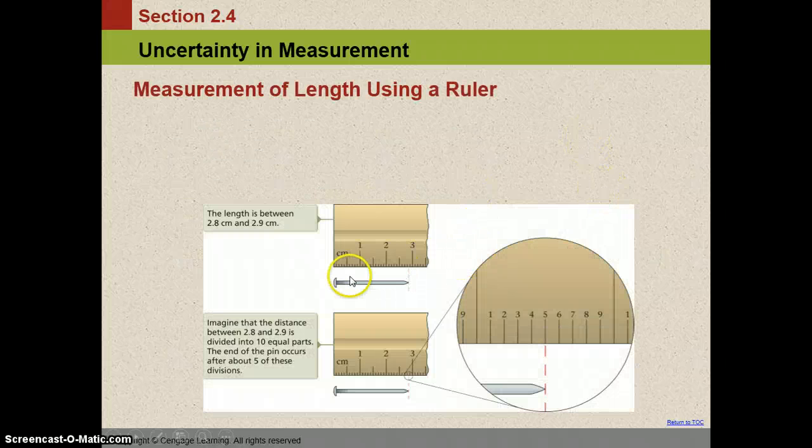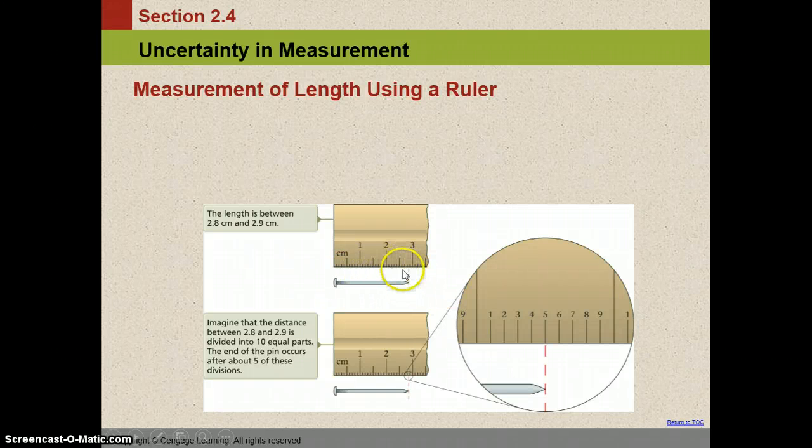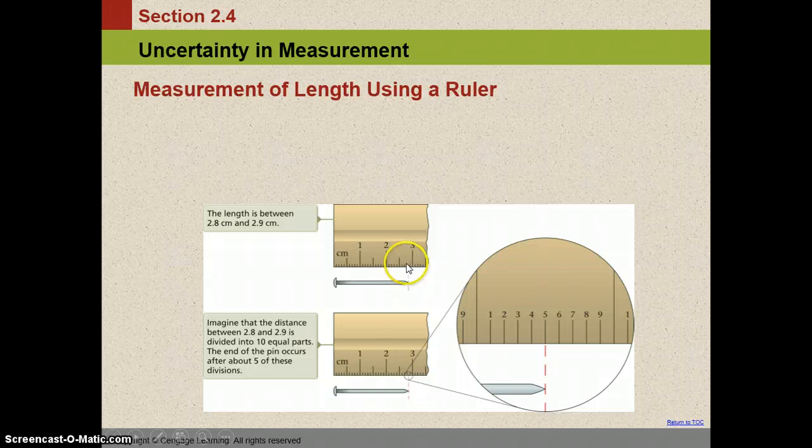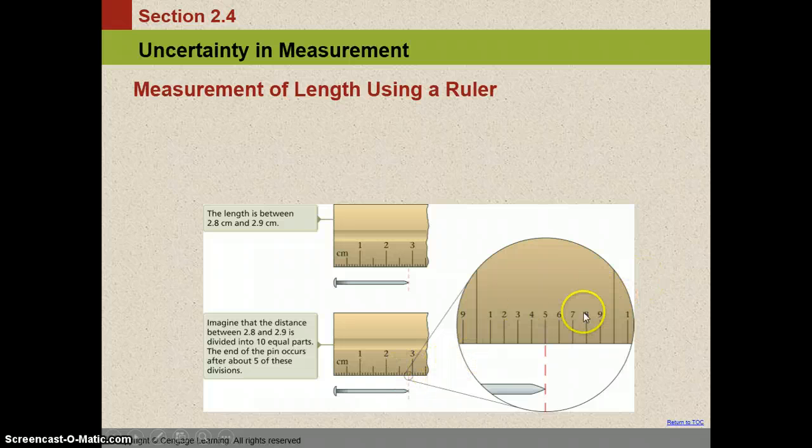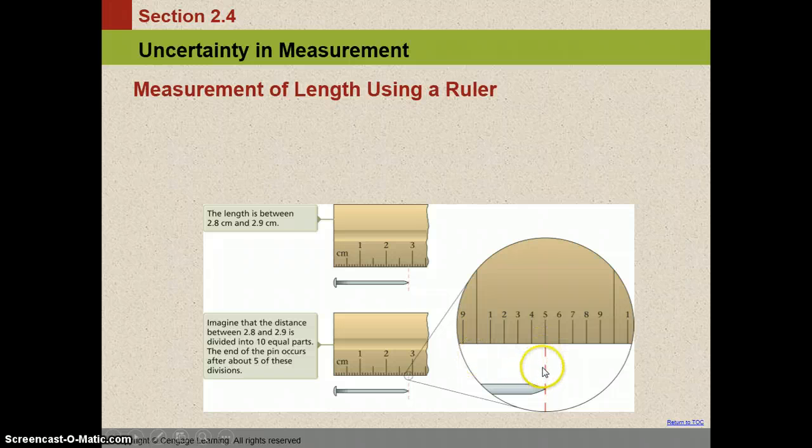So here we have this nail and you look at it and you're measuring it. It looks like it lies somewhere between 2.8 and 2.9, but you can't just say 2.8 or 2.9. What you have to do is you have to imagine the space between the 0.8 and 0.9 like this blown up with 10 more marks between it. And you have to estimate that last digit. So if I imagine that blown up, I would look at it and say, well, that's about 2.85.